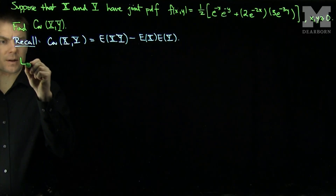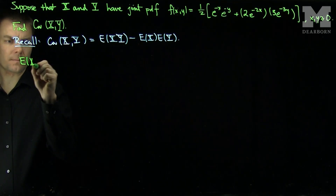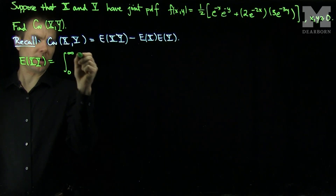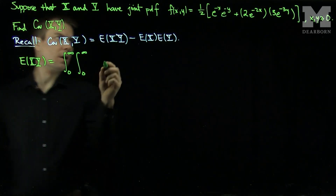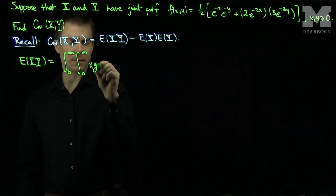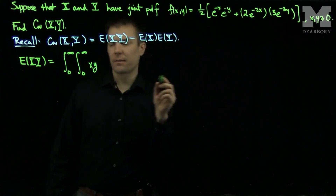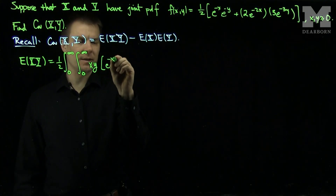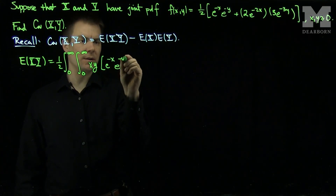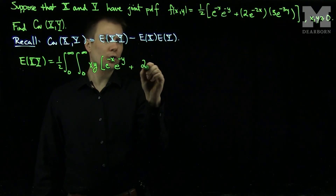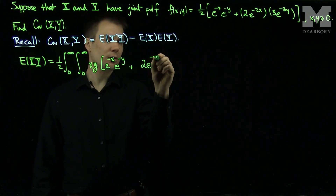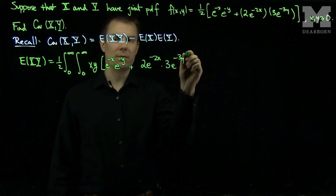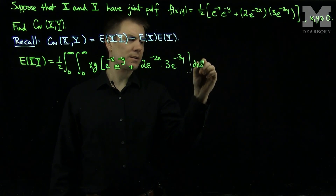If I wish to find the expected value of x times y, this will be the integral from 0 to infinity, the integral from 0 to infinity, of x times y, times the PDF. I'll hold that one-half out in front, and then I'll have e to the minus x, e to the minus y, plus 2 e to the minus 2x, times 3 e to the minus 3y, dx dy.